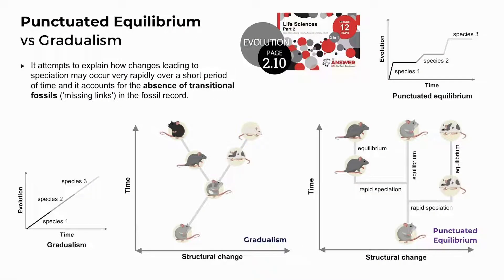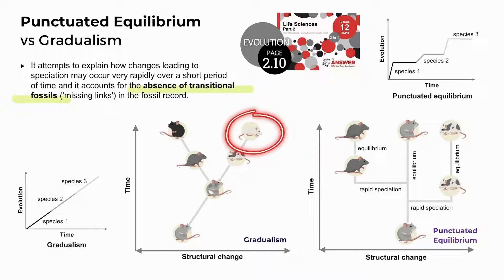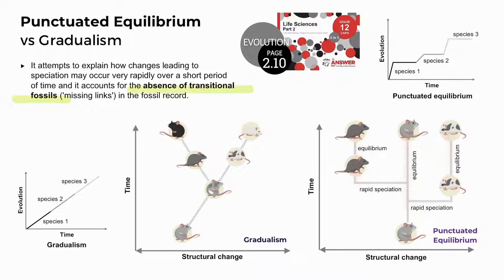Comparing punctuated equilibrium to gradualism, illustrated through the evolution of hypothetical mice: the main difference is the absence of transitional fossils in punctuated equilibrium. Gradualism involves slow changes through mutations, producing transitional forms leading to speciation, with darker or lighter varieties surviving based on environmental adaptation. Punctuated equilibrium involves sudden appearances of new species with rapid speciation, then long periods of no change — stasis or equilibrium — while the original species remains unchanged over long periods.